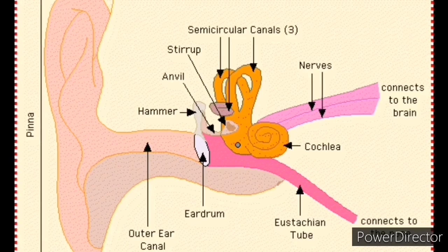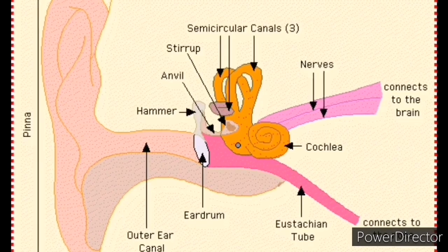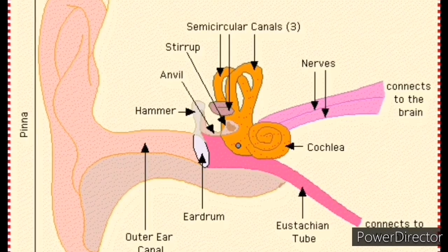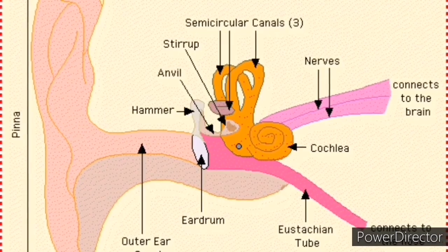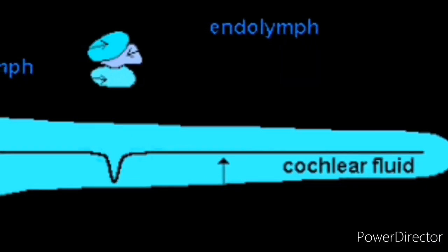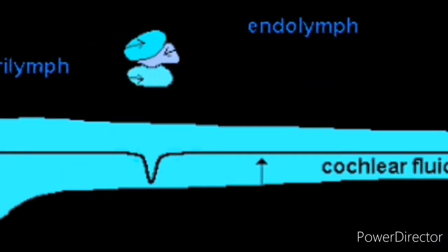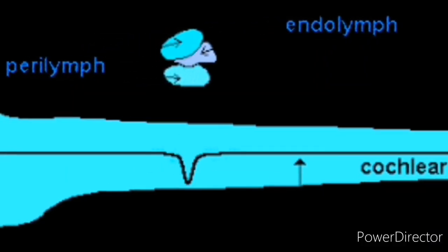The oval window, the round window and the eustachian tube. The inner ear is the innermost part of the ear which consists of the cochlea, the balance mechanism, the vestibular and the auditory nerve.